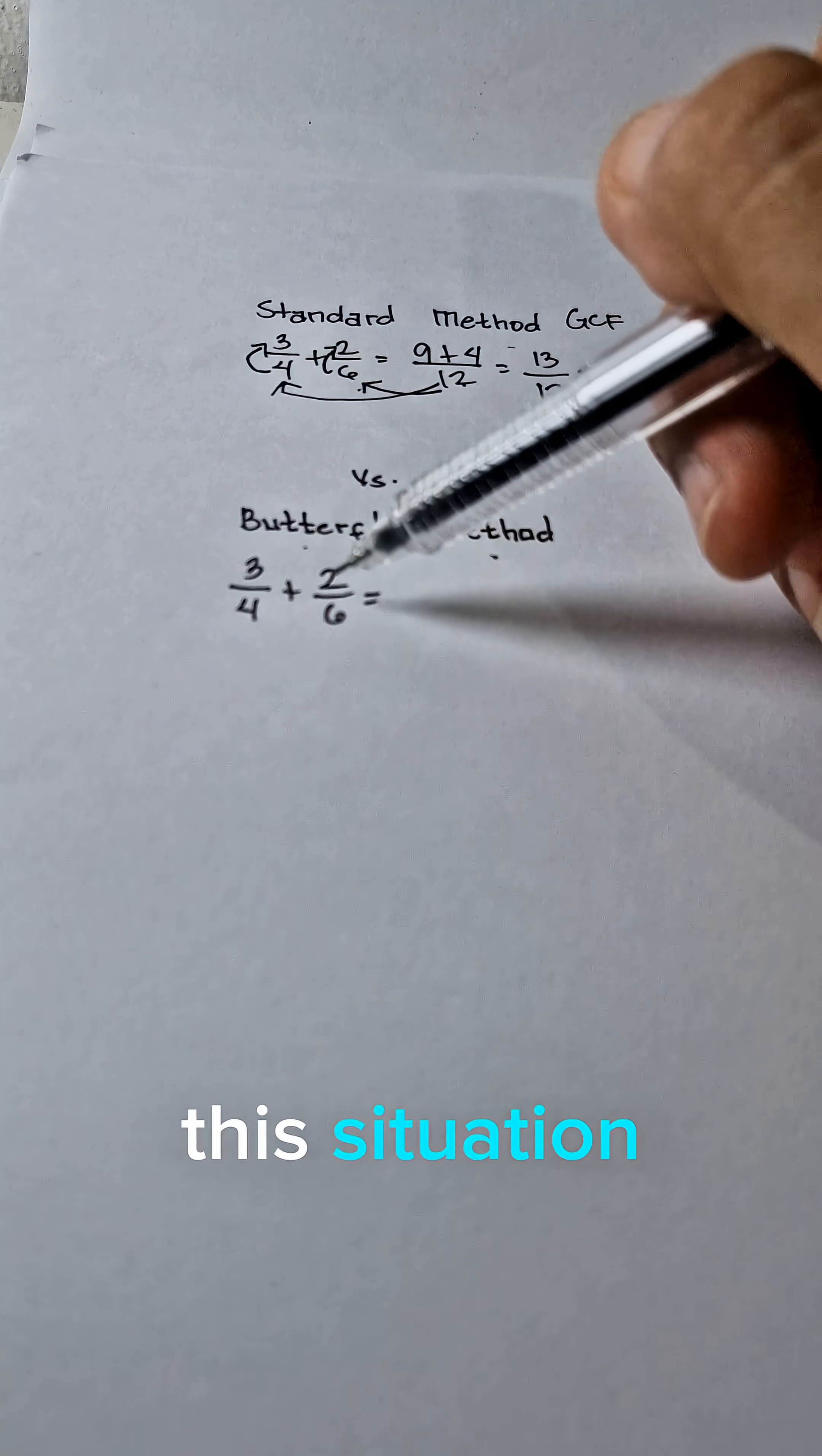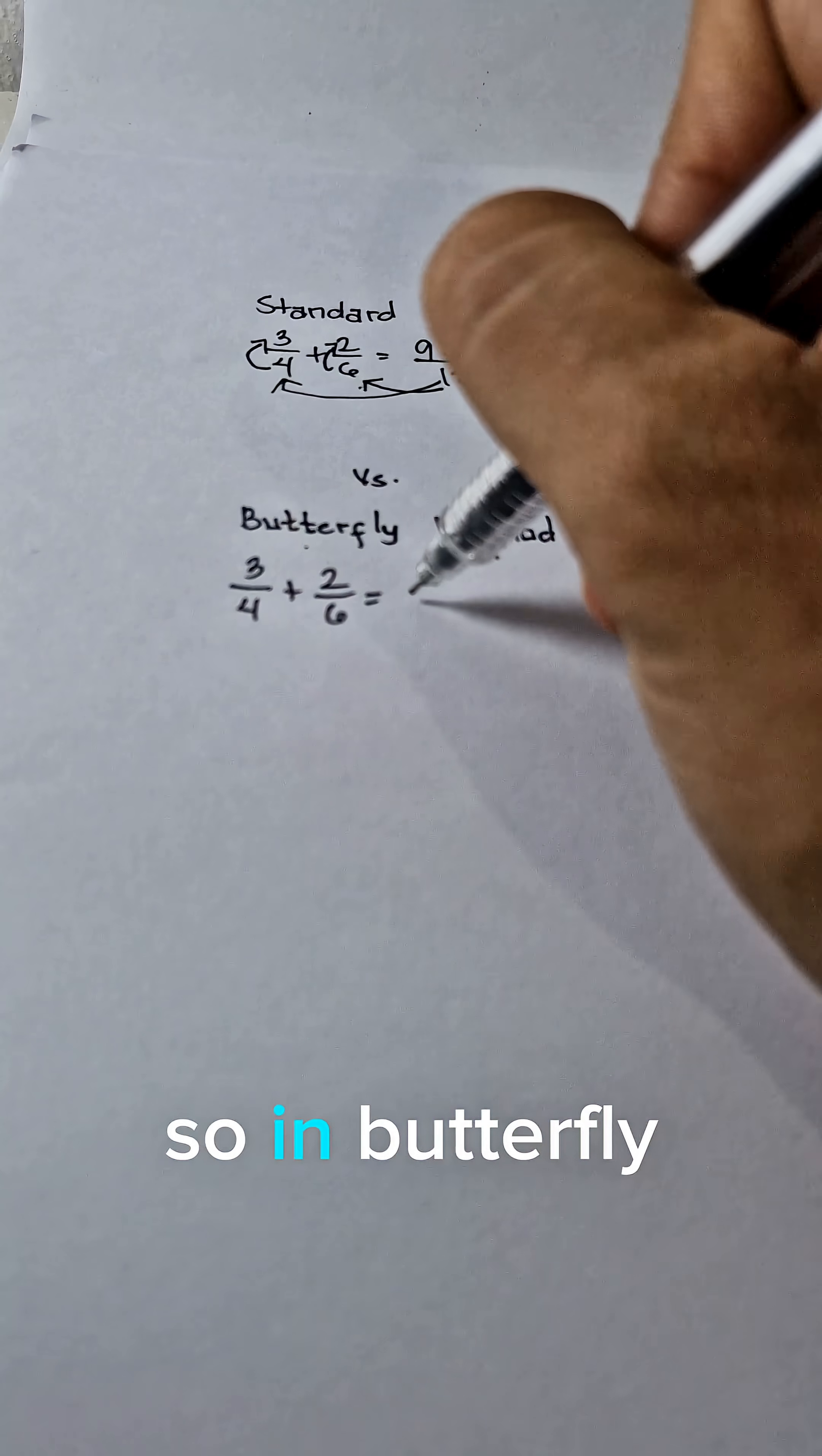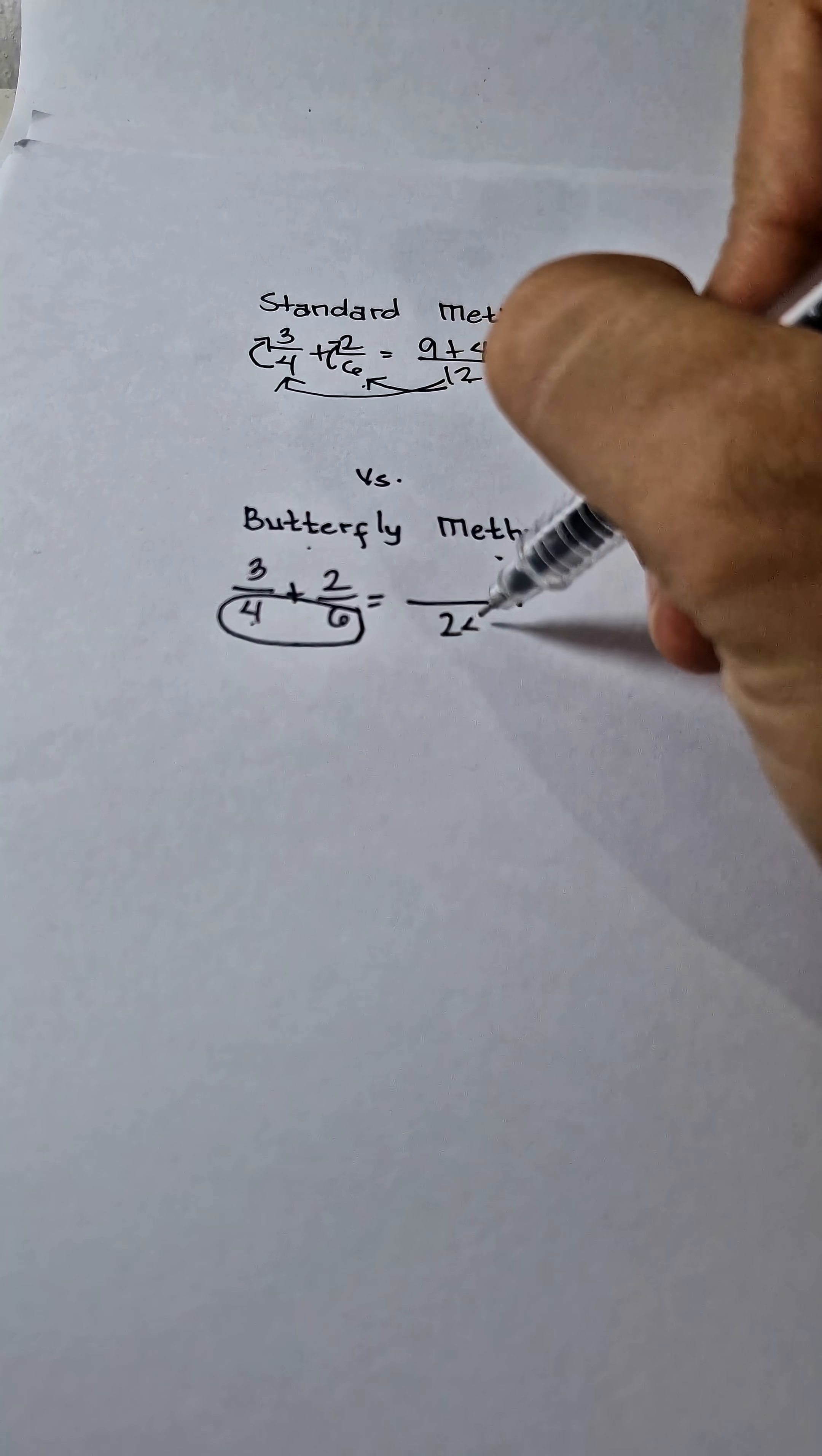Next, let's answer this situation using the butterfly method. So in butterfly method, we multiply the denominator to the denominator. 4 times 6 is 24.